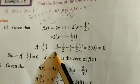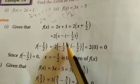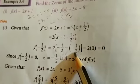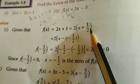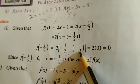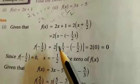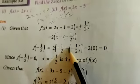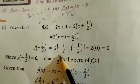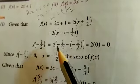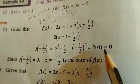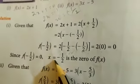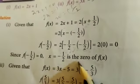Now verify: f of minus 1 by 2 equal to 2 into minus 1 by 2 plus 1. Simplifying in the bracket: 2 into minus 1 by 2 gives minus 1, so minus 1 plus 1 by 2 cancels — wait, minus 1 by 2 plus 1 by 2 cancel, giving 2 into 0, that is equal to 0. Since f of minus 1 by 2 equal to 0, x equal to minus 1 by 2 is the zero of f of x.